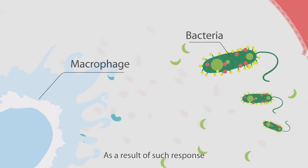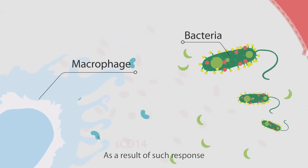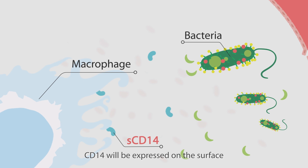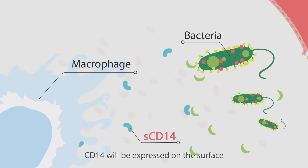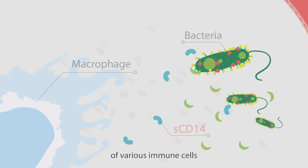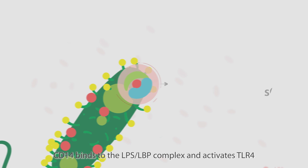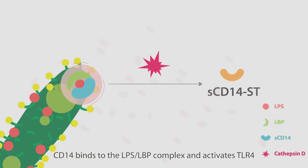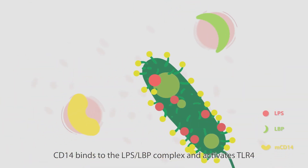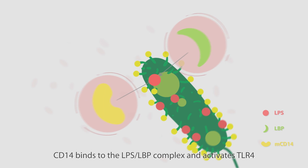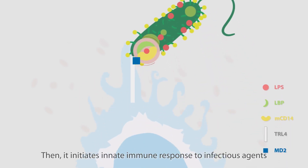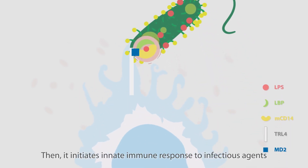As a result of such response, CD14 will be expressed on the surface of various immune cells. CD14 binds to the LPS-LPD complex and activates TLR4. Then it initiates innate immune response to infectious agents.